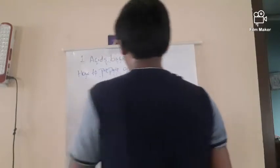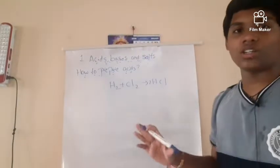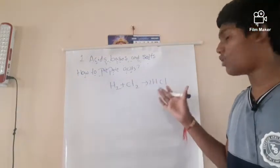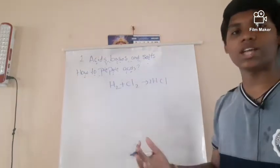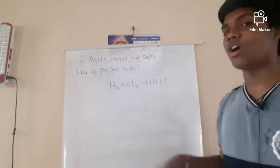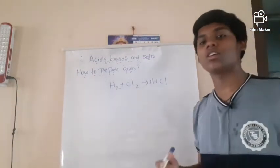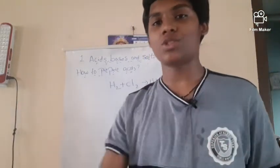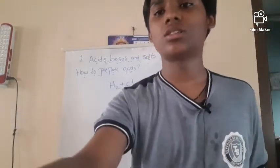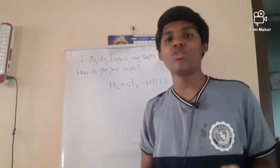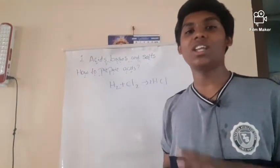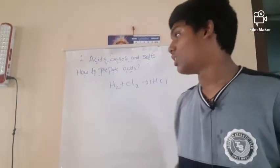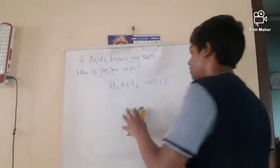When hydrogen reacts with chlorine gas, it forms hydrochloric acid. This is the direct method — not dissolving anything in water. Likewise, when hydrogen reacts with bromine gas, it also forms hydrogen bromide.